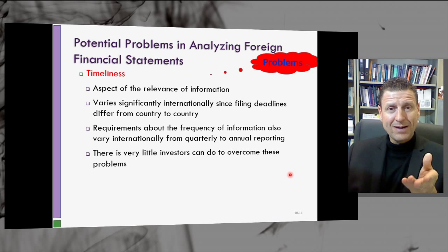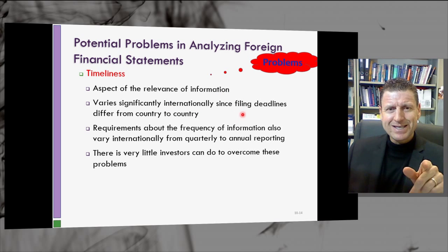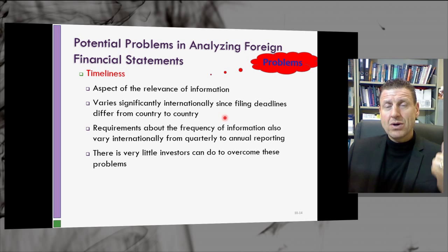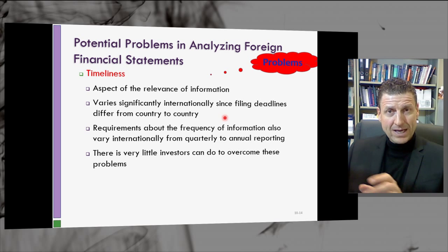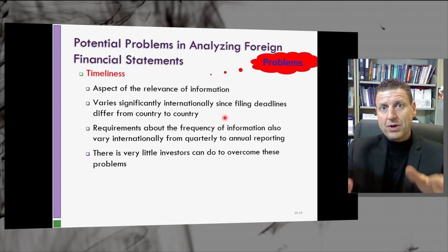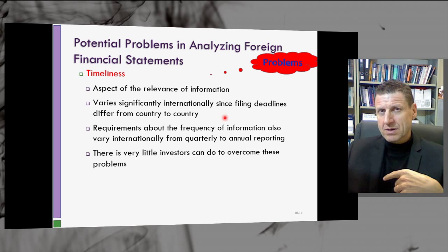Timeliness is another problem in analyzing foreign financial statements. The relevance of information varies significantly internationally since filing deadlines differ from country to country. In the US there's a calendar year approach, in Australia the financial year ends June 30, and in Hong Kong it ends around March 30. The easiest approach is to compare quarter to quarter or align calendar years for an apples-to-apples comparison.